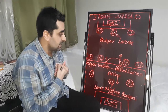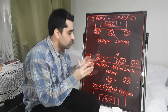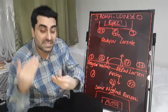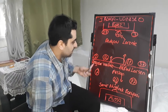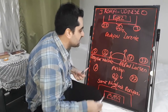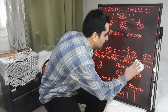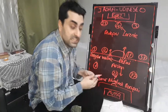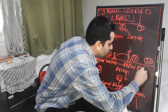In the second half, Udinese's coach Gotti made some substitutions. First, Stryger Larsen came off on the right and Molina came on, also playing on the right.